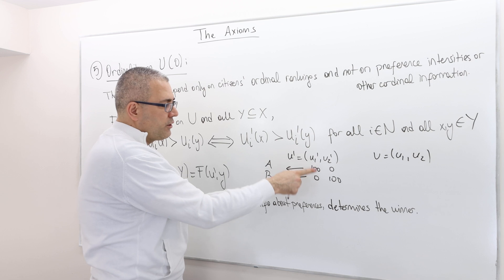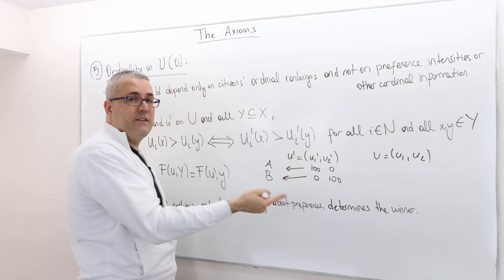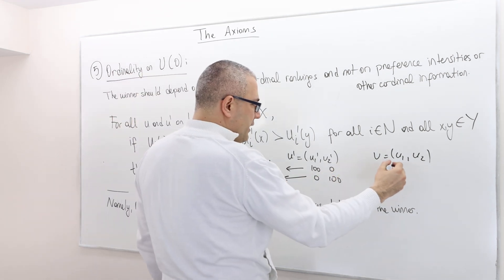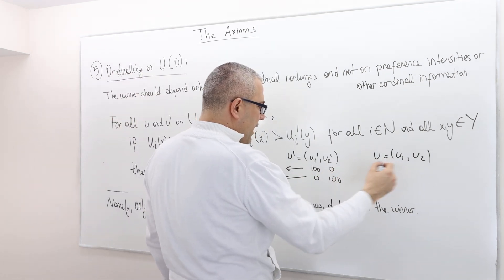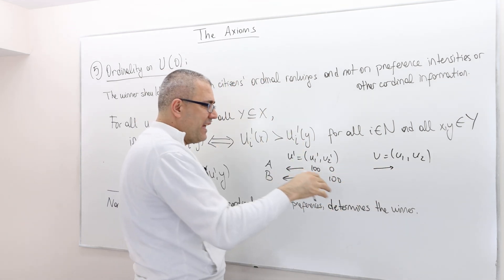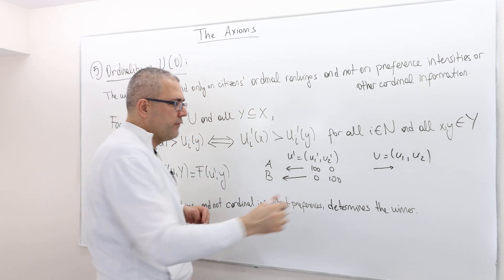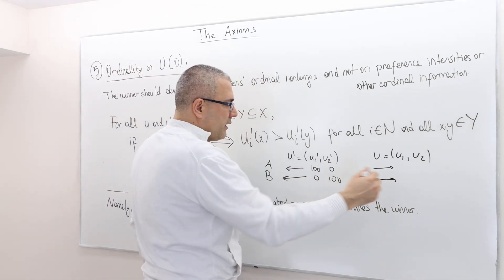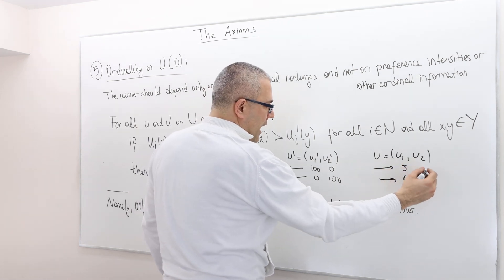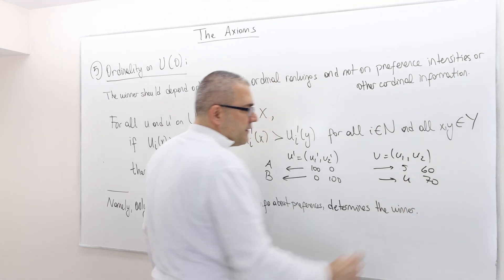So basically, Agent 1 here prefers A to B, Agent 2 prefers B to A, because B's utility is higher. Well, here, however, the first number is candidate A's utility and the second is candidate B's utility. Here it is five, four, and here it is 60 and 70. So again, these are two different preference profiles, but the thing is...